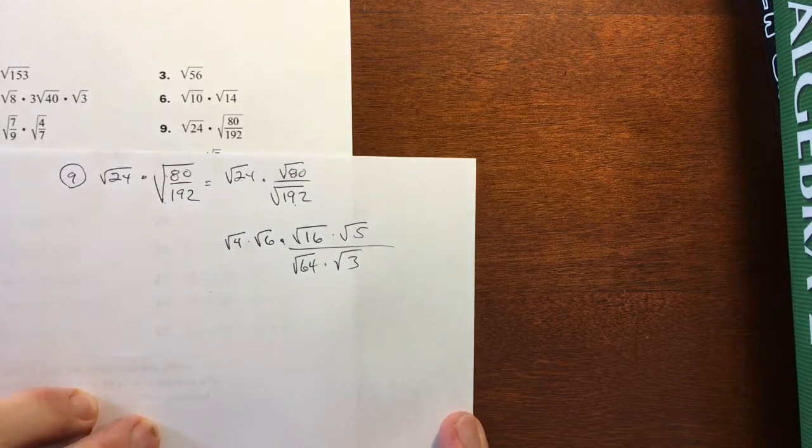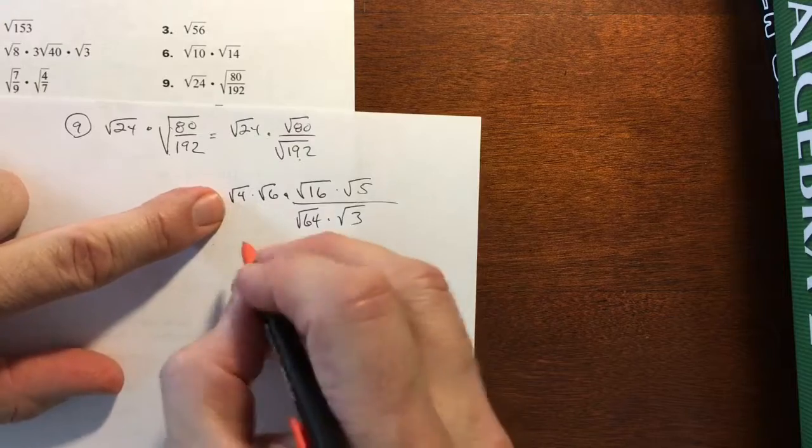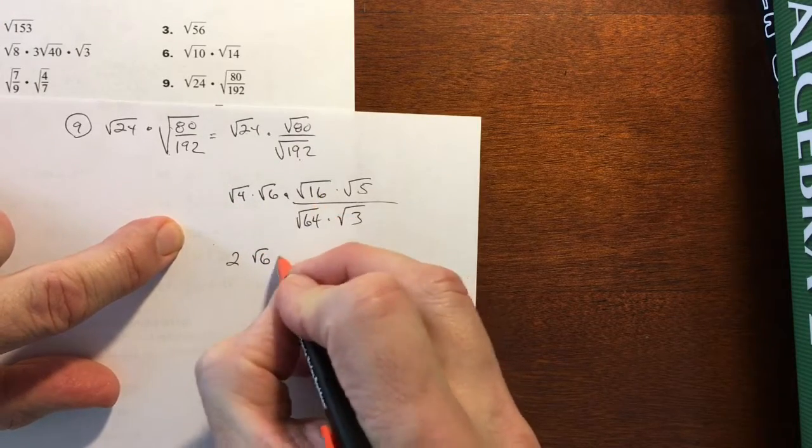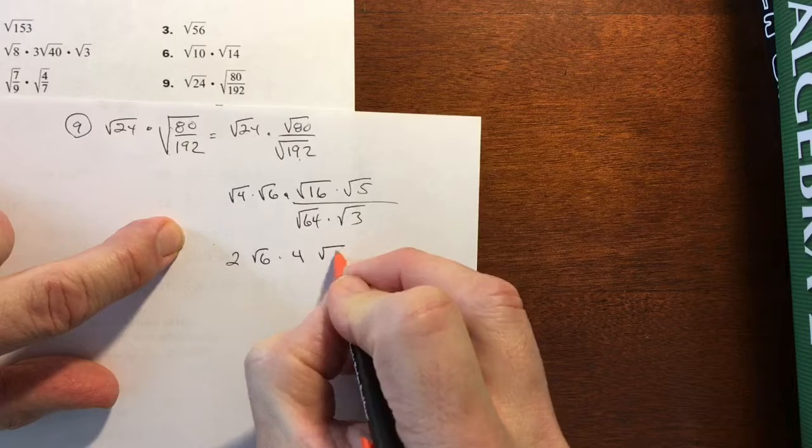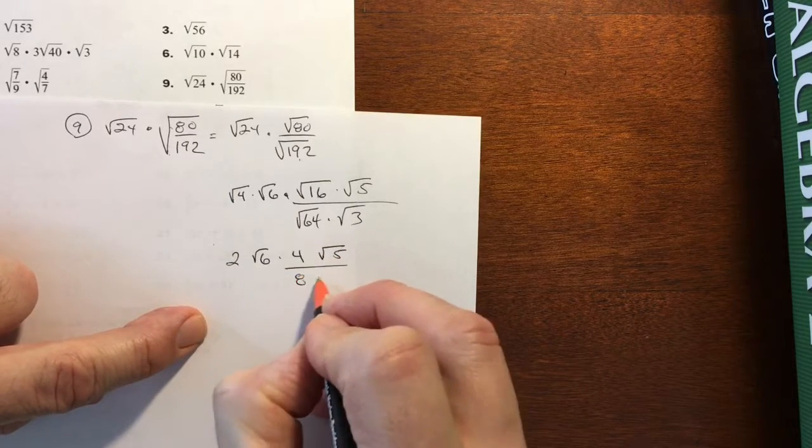All right. Well, I've got some perfect squares to clean up. Let's do that first. So this is 2 square root of 6 times 4 square root of 5. And this is then 8 square root of 3.